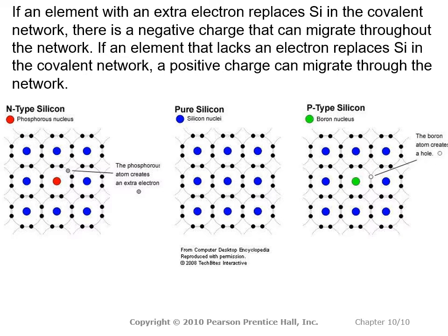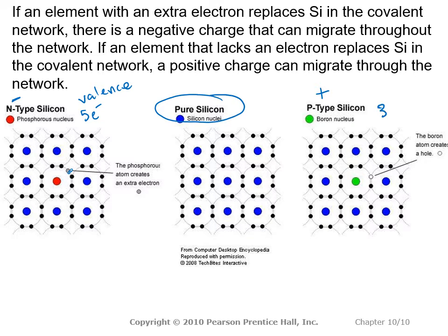Here's pure silicon. If we replace one of the elements with something that has a negative charge — for example, phosphorus, which has five valence electrons instead of four — we have an extra electron which can travel throughout the entire network. This is the N-type (N for negative). For the P-type (P for positive), if we substitute a boron nucleus, we've got three valence electrons, creating what we call a hole — an empty spot for an electron — and this hole can travel throughout the entire network.